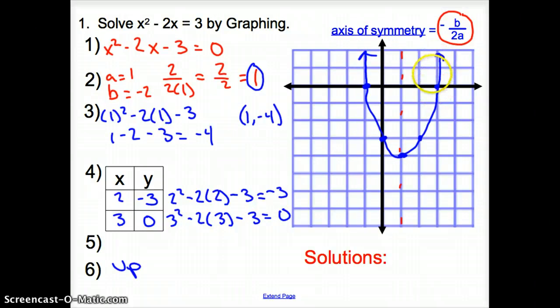What are my solutions now to this graph? We're looking for solutions, and solutions are going to occur where the graph intercepts the x-axis. This point on my x-axis is 3, so my solution would be 3. This point is negative 1. So my solutions to this equation are 3 and negative 1.